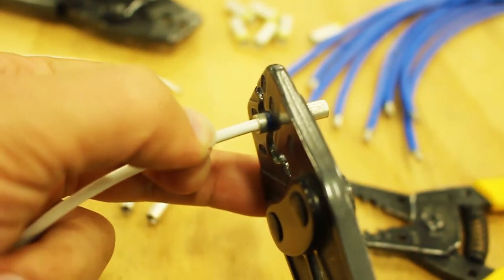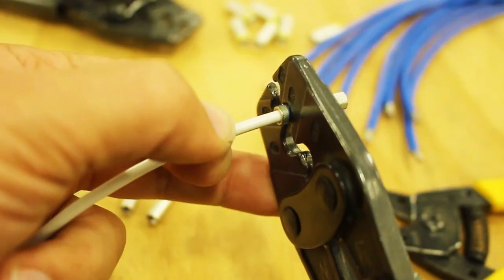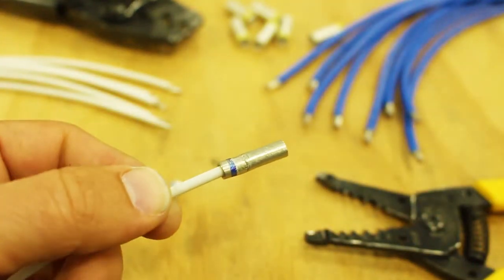Now, the splice is crimped with the proper tool. This crimp bends the connector around the wire creating a solid connection.